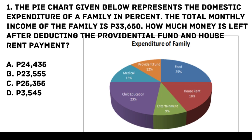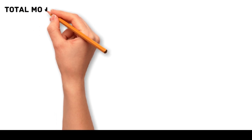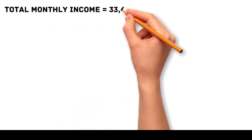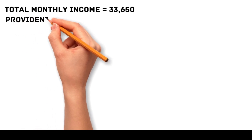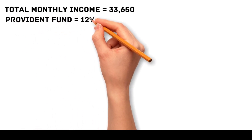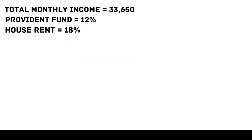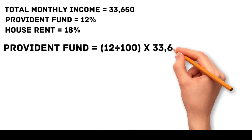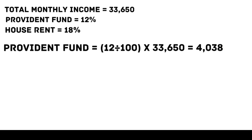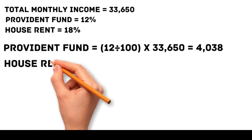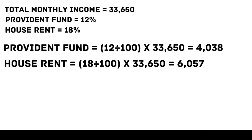To determine the amount of money left after deducting the provident fund and house rent payment from the family's total monthly income of 33,650 pesos, we first need to calculate the amounts for both expenses. The total monthly income is 33,650 pesos, the provident fund is 12%, and the house rent is 18%. Provident fund = 12/100 × 33,650 = 4,038. House rent = 18/100 × 33,650 = 6,057.